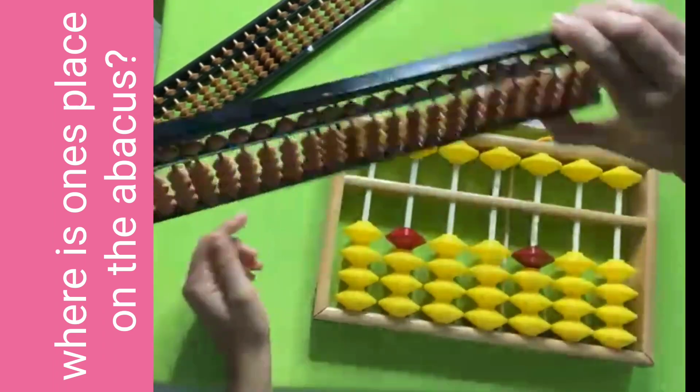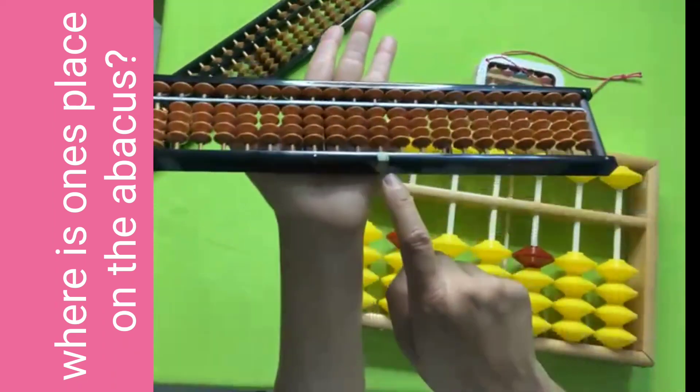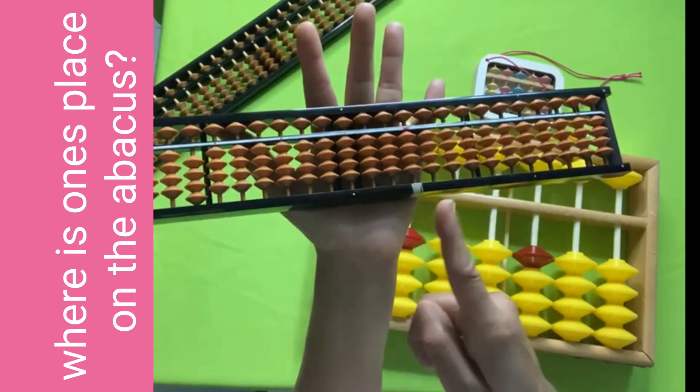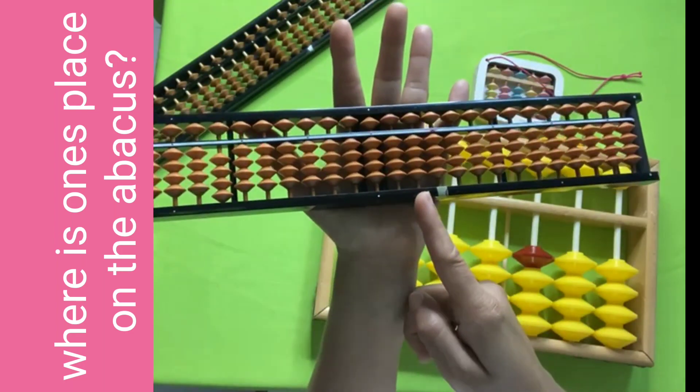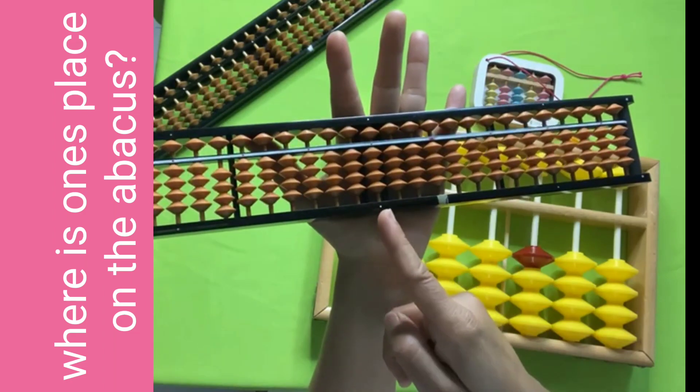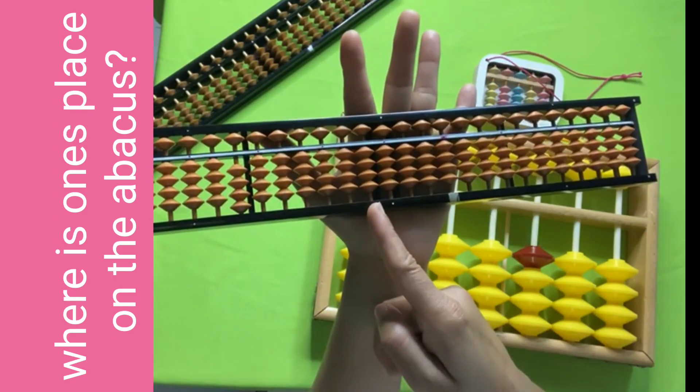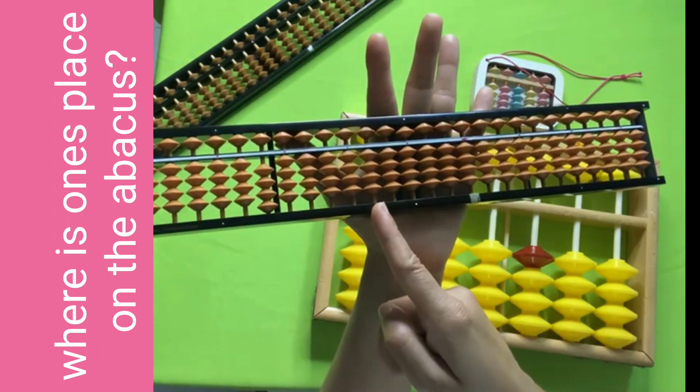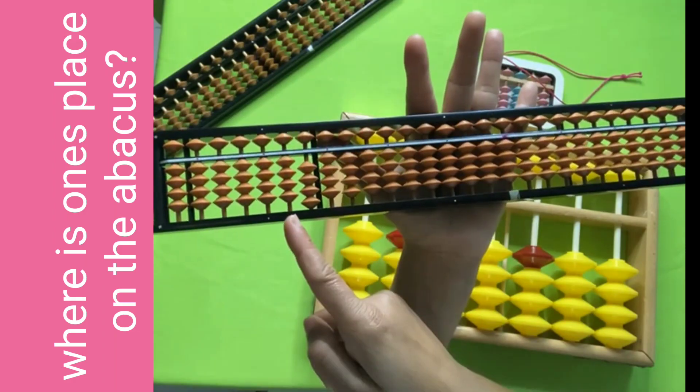In a long abacus, this is my marked rod: ones, tens, hundreds, thousands, ten thousand, hundred thousand, million, and so on. I cannot count more than this.